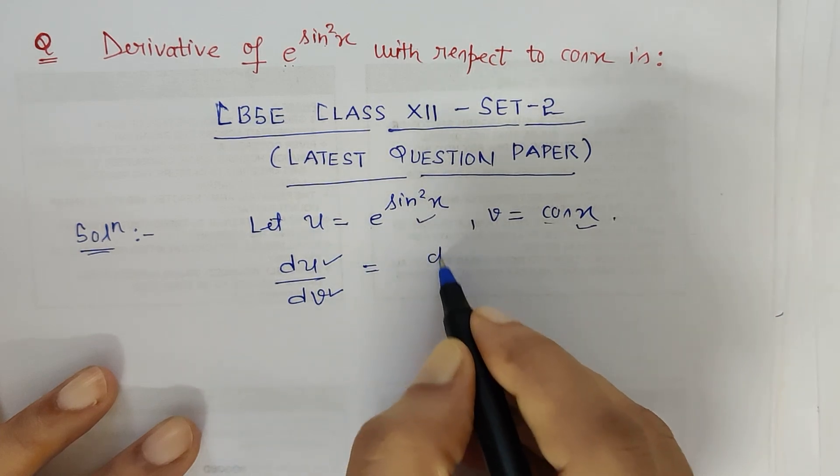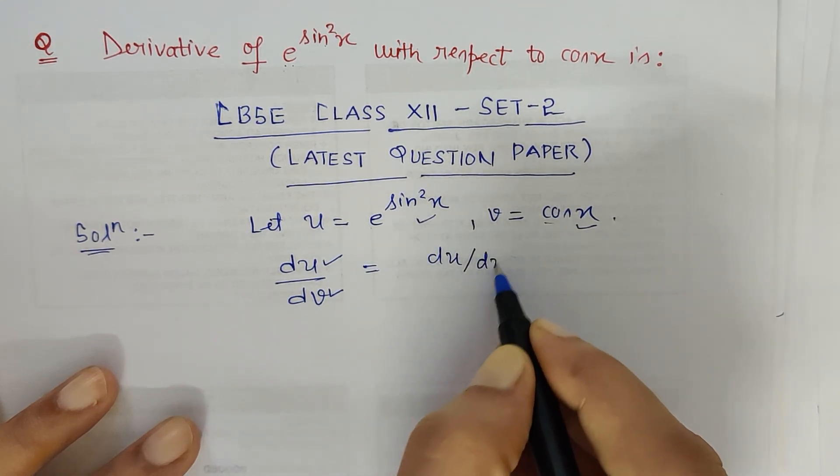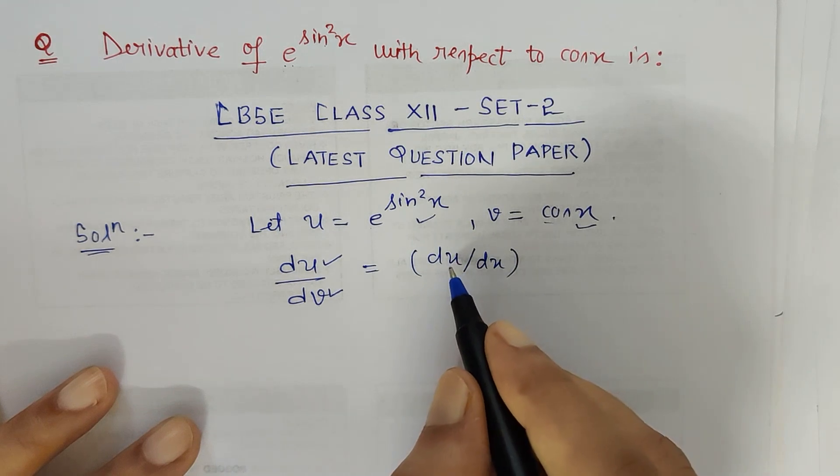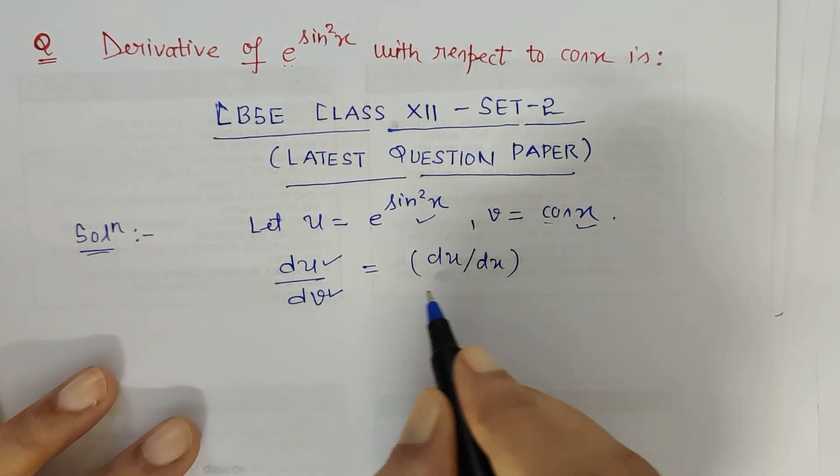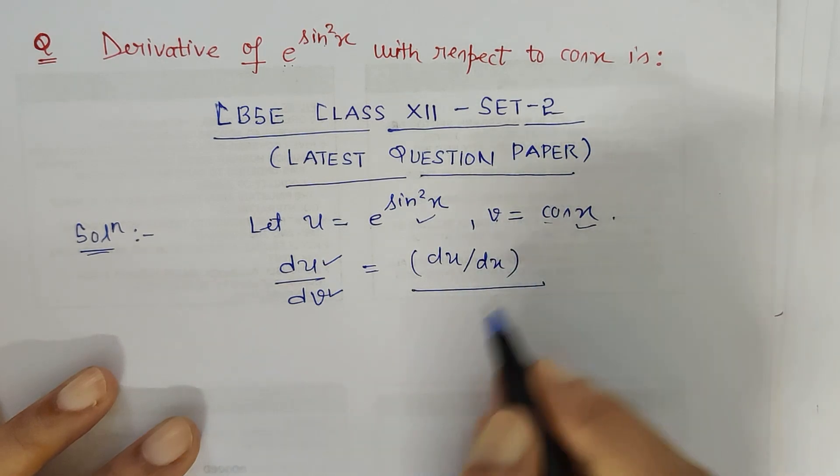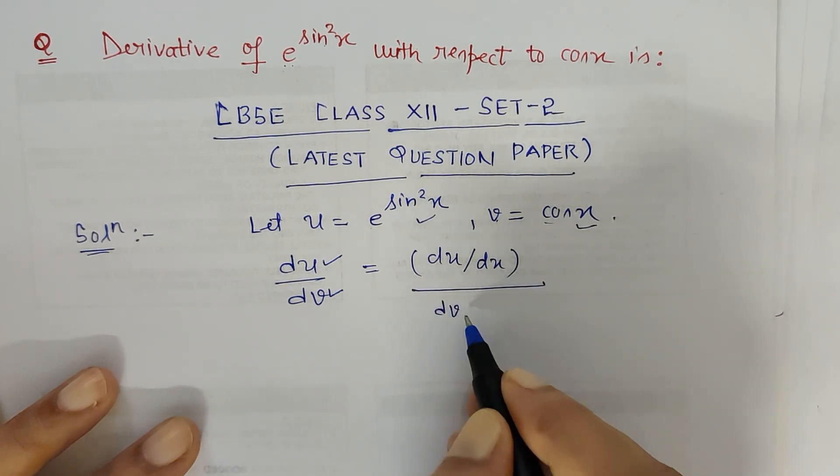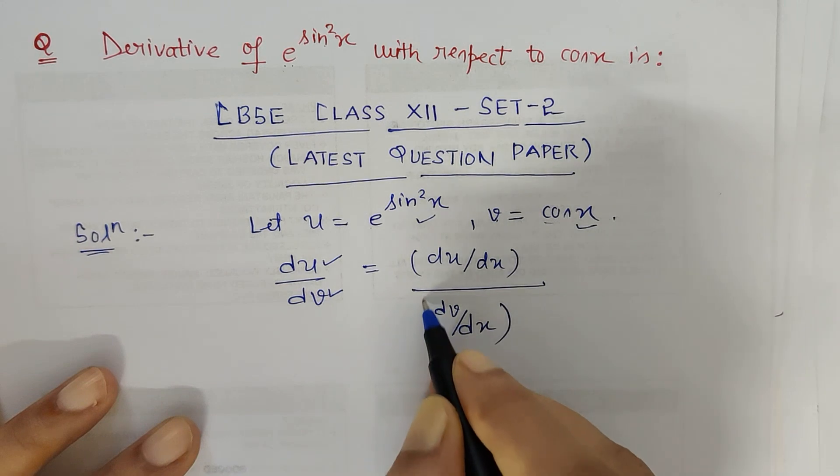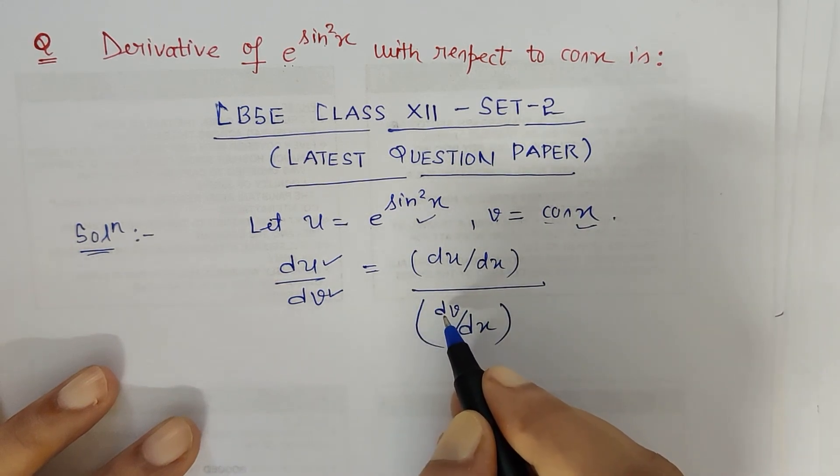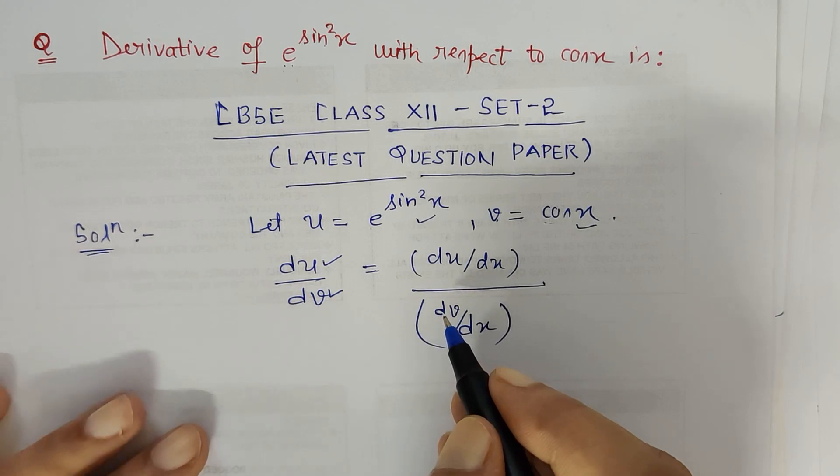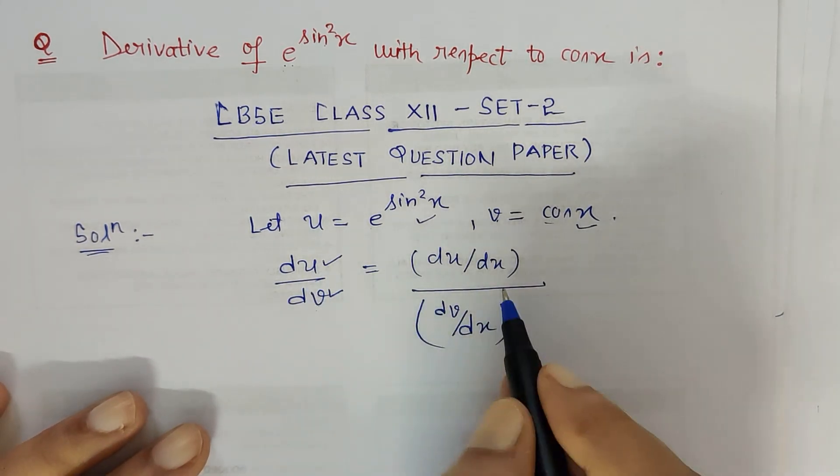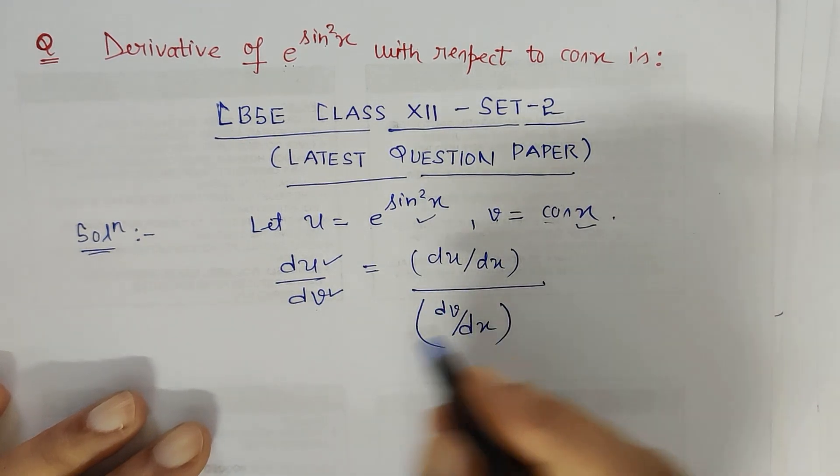So this can further be written as du upon dx because u is a function of x and v is also a function of x. So it is dv by dx. And in the introductory page of differentiability it is clearly given: du upon dv is given by du by dx upon dv by dx.